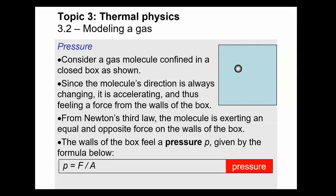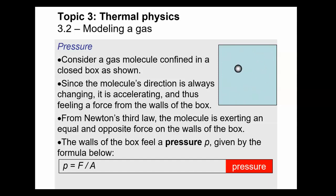We define pressure to be the force per unit area exerted on an object: P equals F over A. In the context of a gas, F is the force acting on the walls from the collisions of the gas particles, and A is the area impacted by the collision.